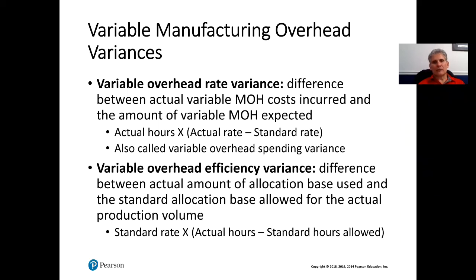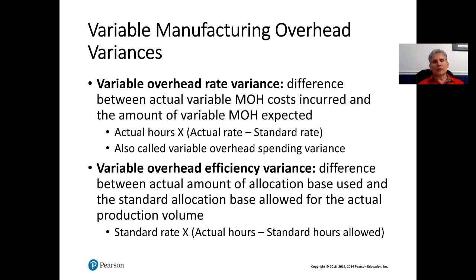We're going to cover variable manufacturing overhead variances, and those variances are broken up into two different variances. You're going to have your overall variance, but then we're going to try to analyze it just like we did for direct materials and direct labor — we broke it down into more detail. Variable overhead variance will be broken down into two categories: one is called the rate and one is called efficiency.